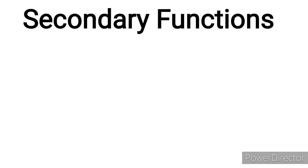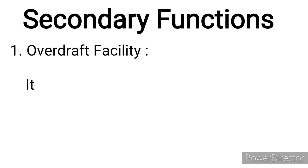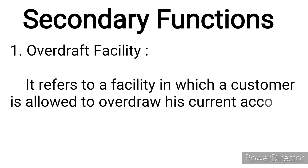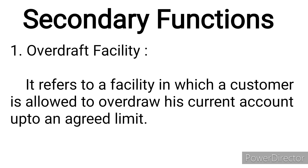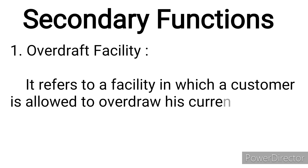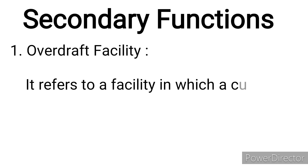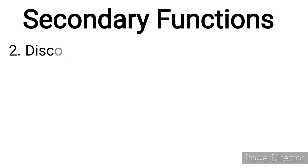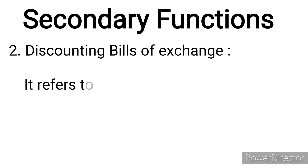Now we'll discuss the secondary functions of commercial banks. The first is overdraft facility — a facility in which a customer is allowed to overdraw his current account up to an agreed limit. The bank makes payment on the customer's behalf even beyond their balance, but charges interest on the amount overdrawn. This facility is generally given to respectable and reliable customers for a short period.